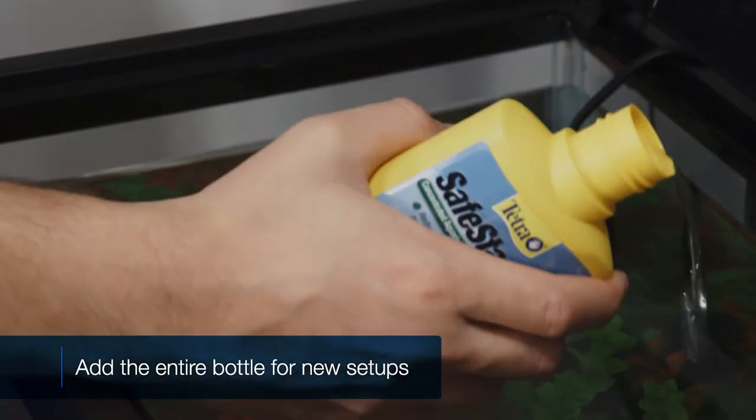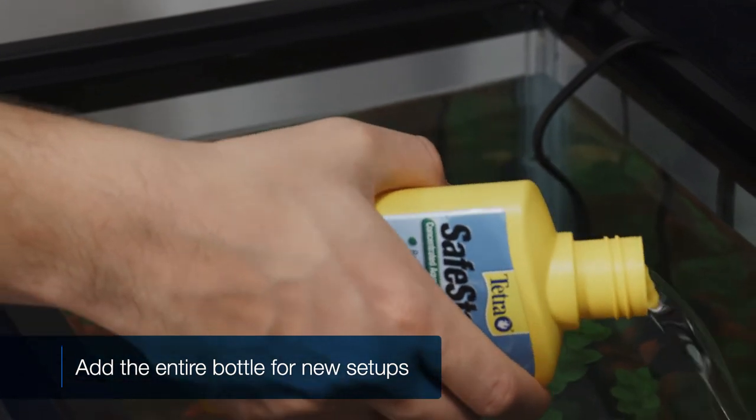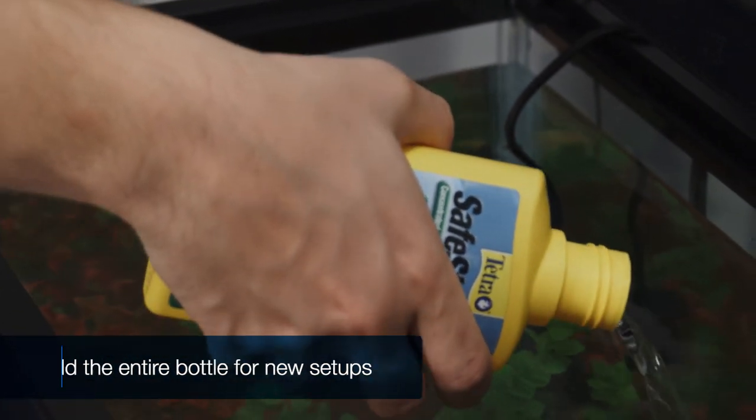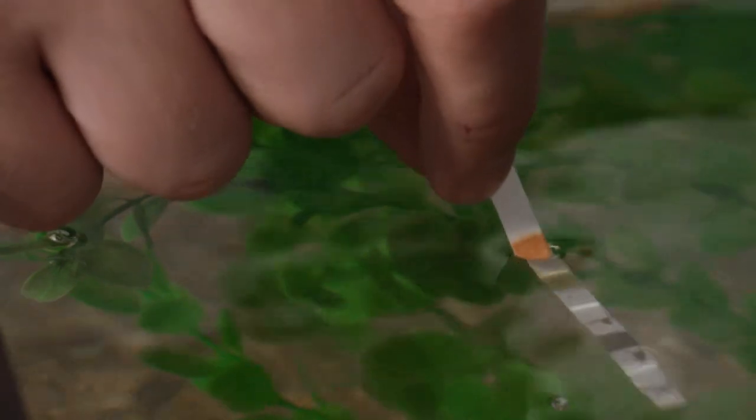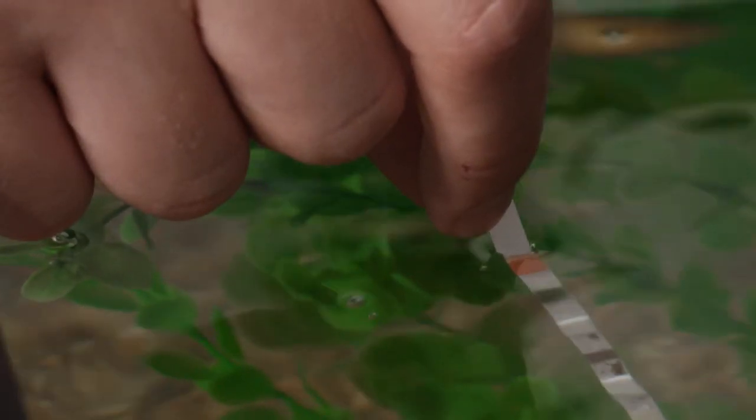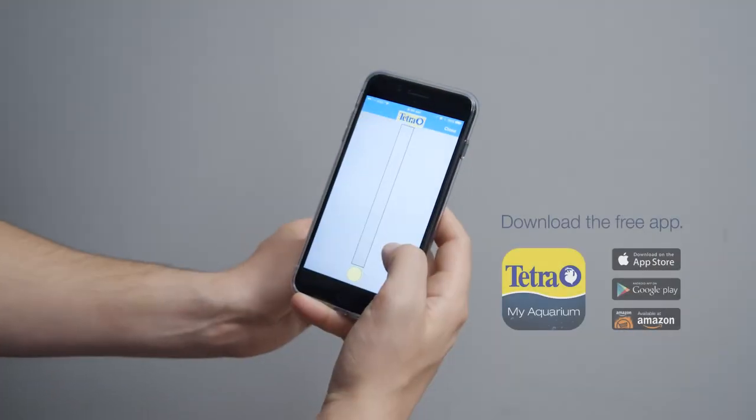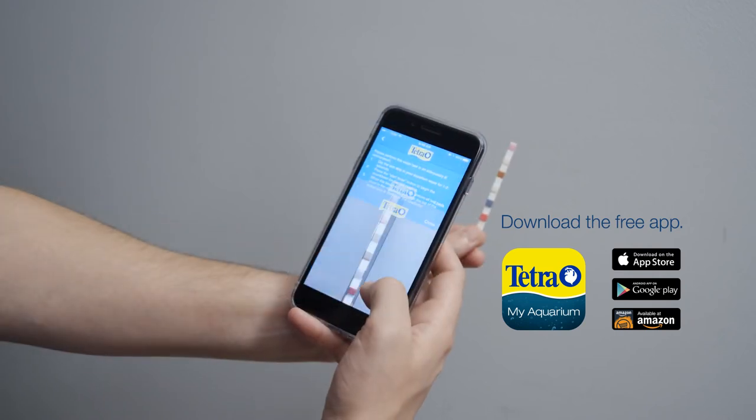In the meantime, dose your tank with Tetra Safe Start to quickly cycle it with live bacteria. We also recommend testing your water quality with Tetra Easy Strips and the MyAquarium app, which you can download free.